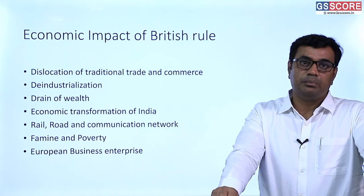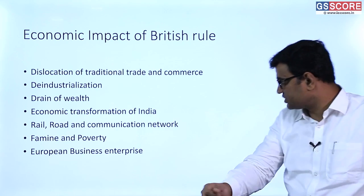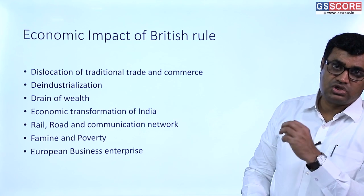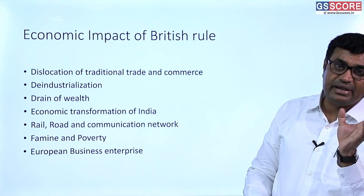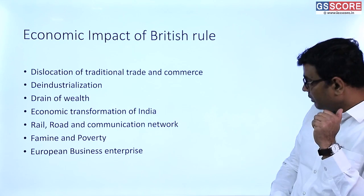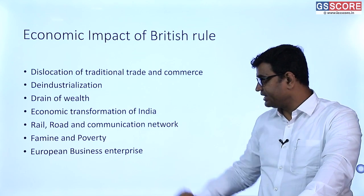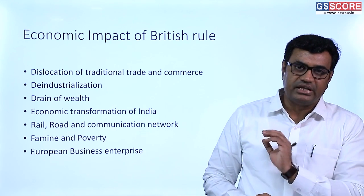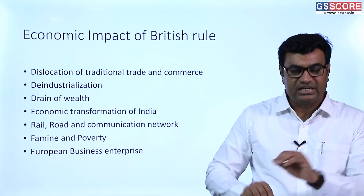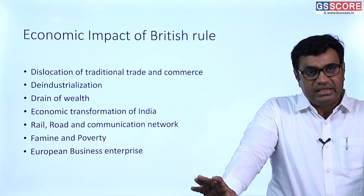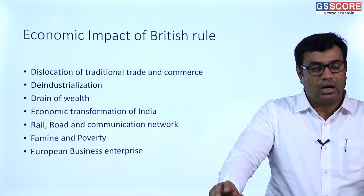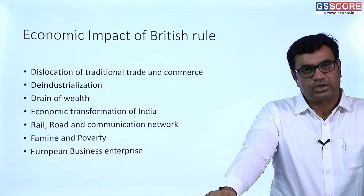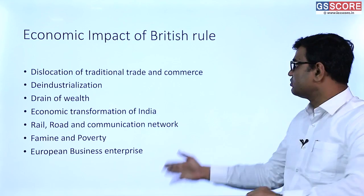Railways were primarily to collect raw materials from remote areas and supply finished British products to Indian markets, making India dependent on British manufactured goods. Telegraph communication lines were laid to ensure coordination and prevent revolts. All these factors resulted in famine and poverty among Indian masses. European business enterprises served only commercial interests, not the interest of India — economically, India was paralyzed under British India Company rule.